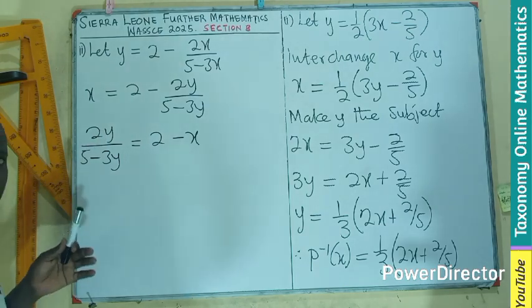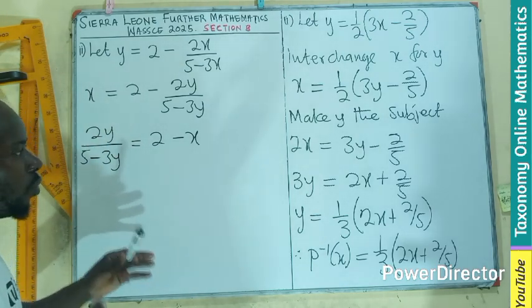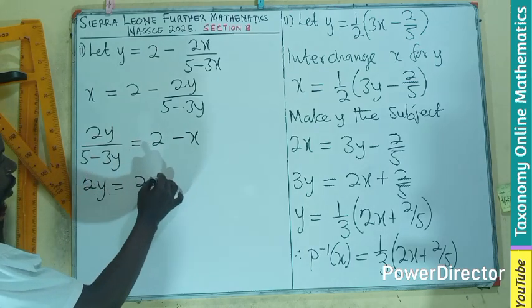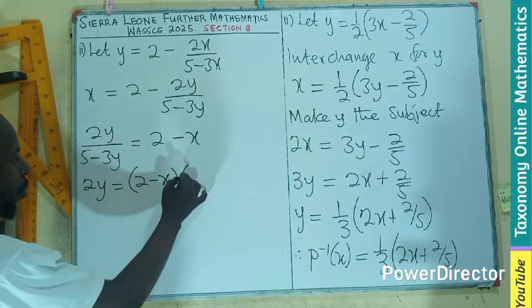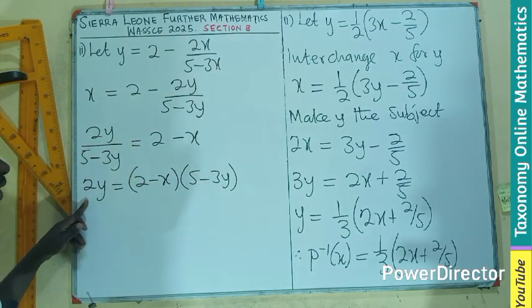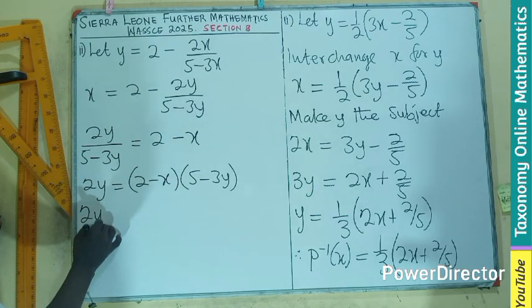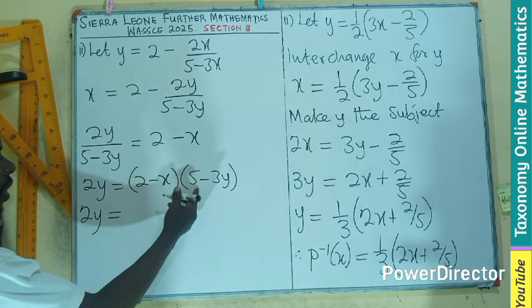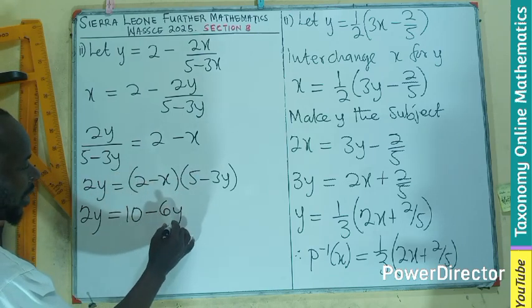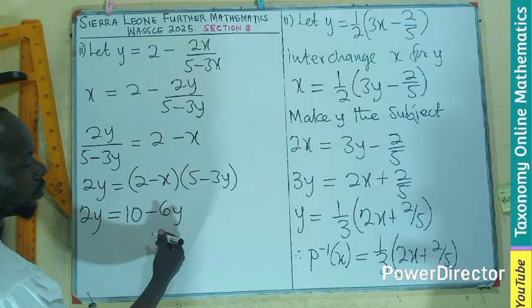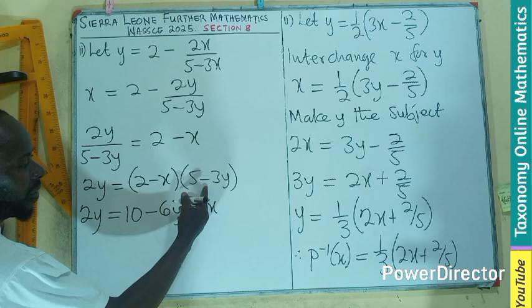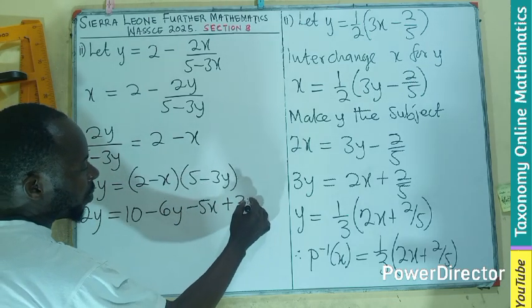The Y is in two places, both numerator and denominator. So we need to expand by cross-multiplying. If you cross-multiply, you have two Y equals to two minus X multiplying five minus three Y. We need to expand this one here. So two Y will now be equal to two times five, ten, two times minus three Y, minus six Y, minus X times five, minus five X, minus X times negative three Y, positive three XY.